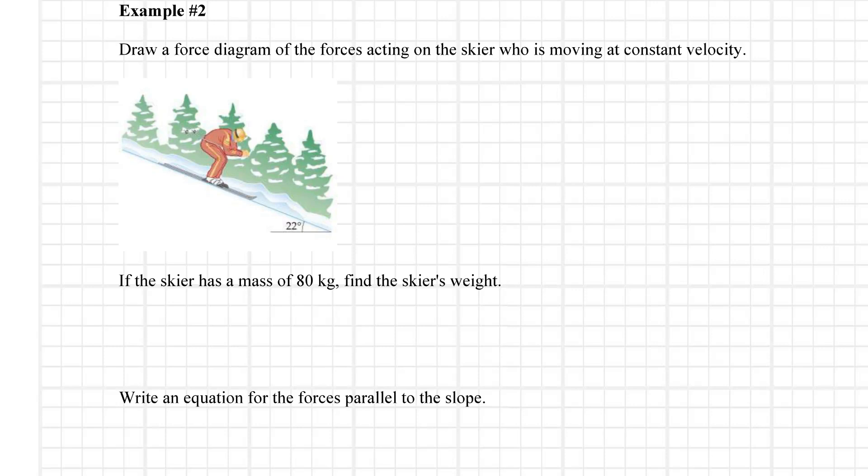Here we are at example two. It looks altogether much more exciting than Sally pulling a wagon — going skiing looks like lots of fun. Again we're doing the constant velocity problem, so we know that the forces will be balanced.